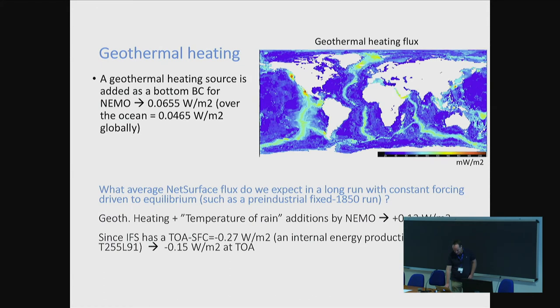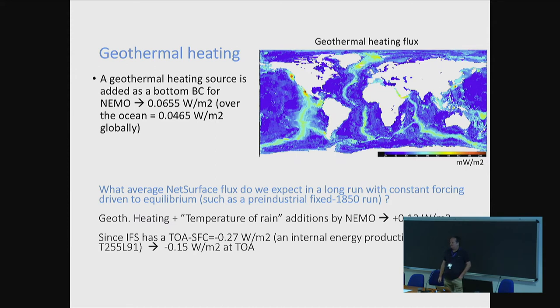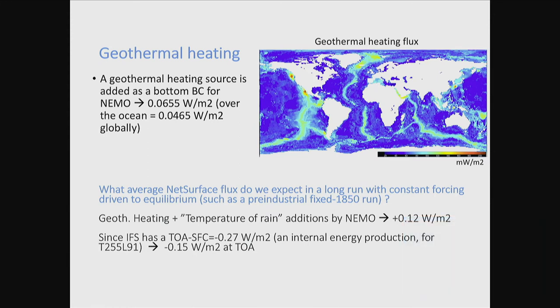There's another thing which happens in the ocean, which also happens in nature: geothermal heating. Personally I thought it was not very relevant, but if you look at the number it adds up to all the other factors - this 0.06 W/m² of geothermal heating in the ocean. That's physical. You can decide whether to represent it or not. But you have to remember that when you do your balances and assess if the fluxes to your ocean are realistic, you would have to add this number to your balance.